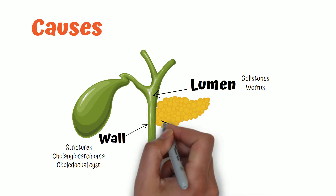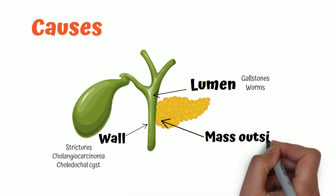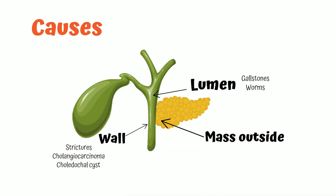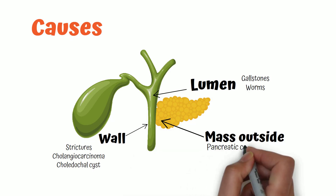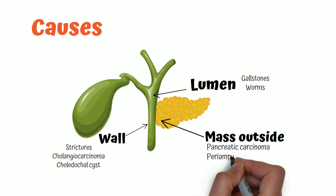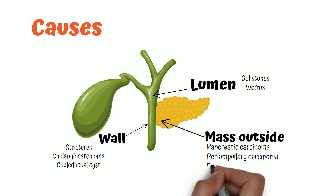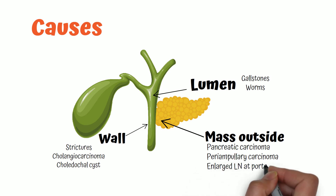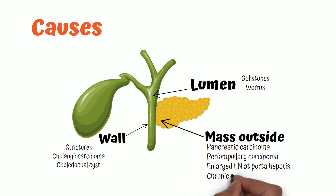It can also be from a mass outside the wall compressing the bile duct, such as a carcinoma of the pancreas, a periampullary carcinoma, enlarged lymph nodes at the porta hepatis, or chronic pancreatitis.